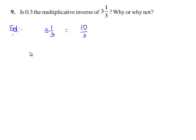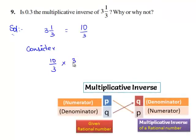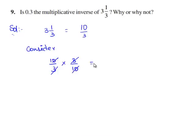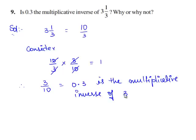Now let us find the multiplicative inverse of 10 by 3. Consider 10 by 3 and multiply this rational number with 3 by 10. The common factors 3 and 10 get cancelled and we are left with 1. Therefore, 3 by 10, which is equal to 0.3, is the multiplicative inverse of 3 1 by 3.